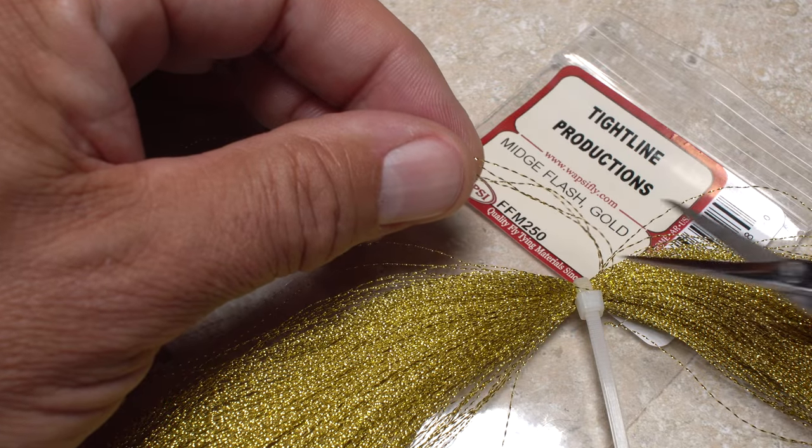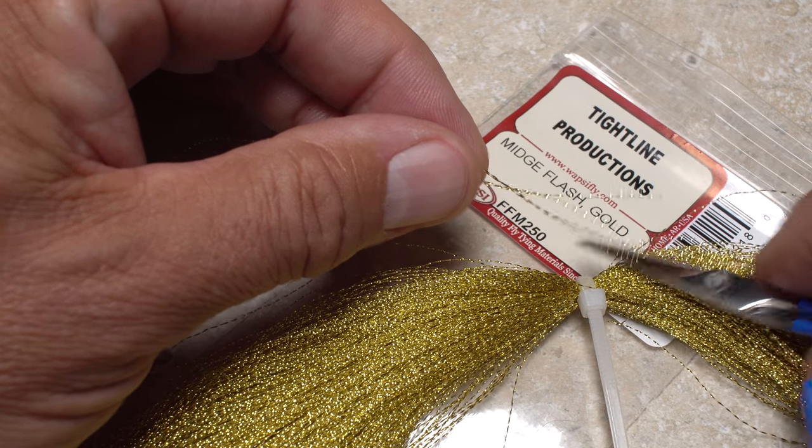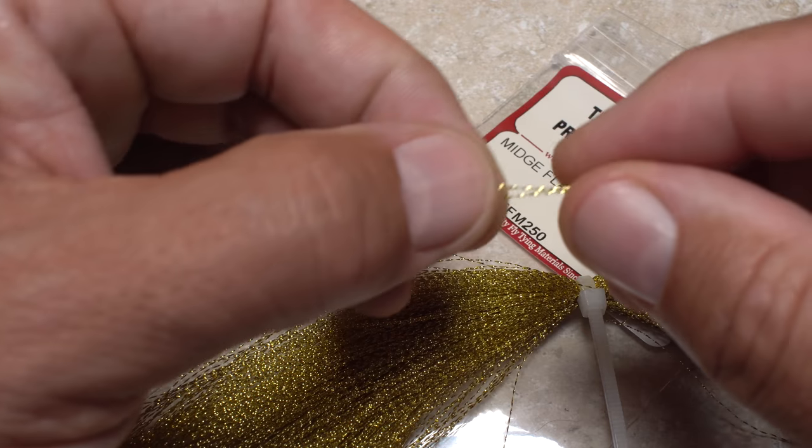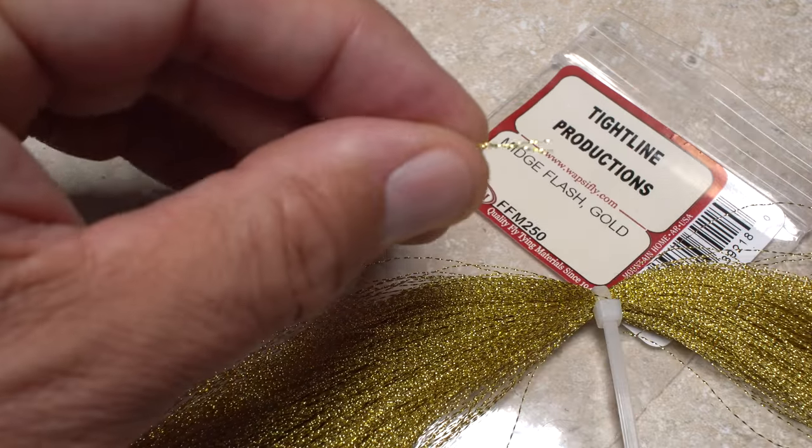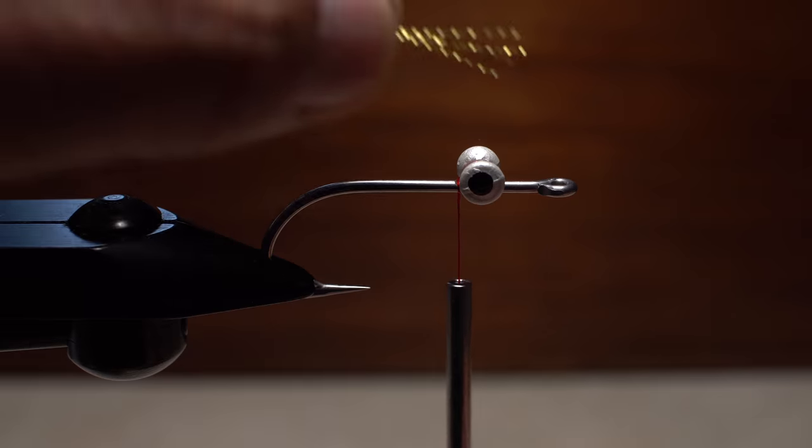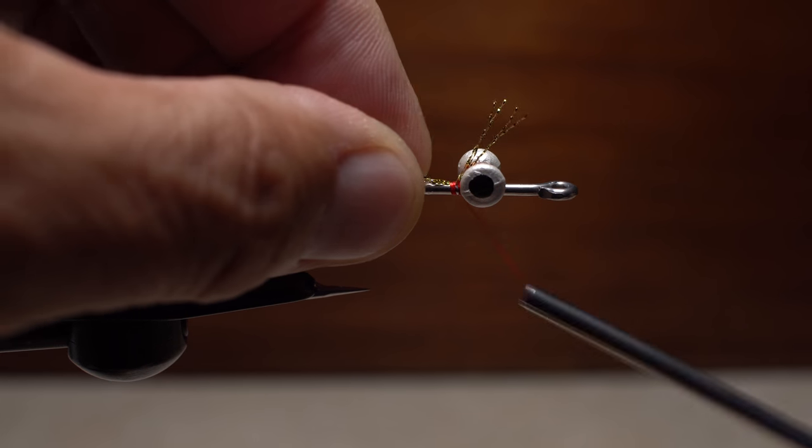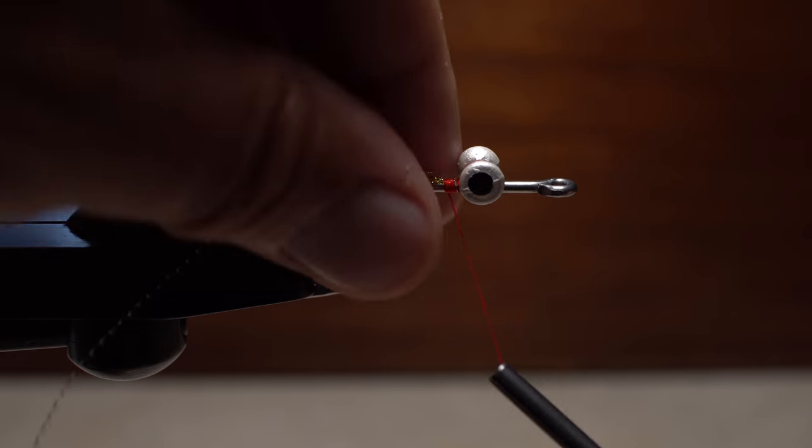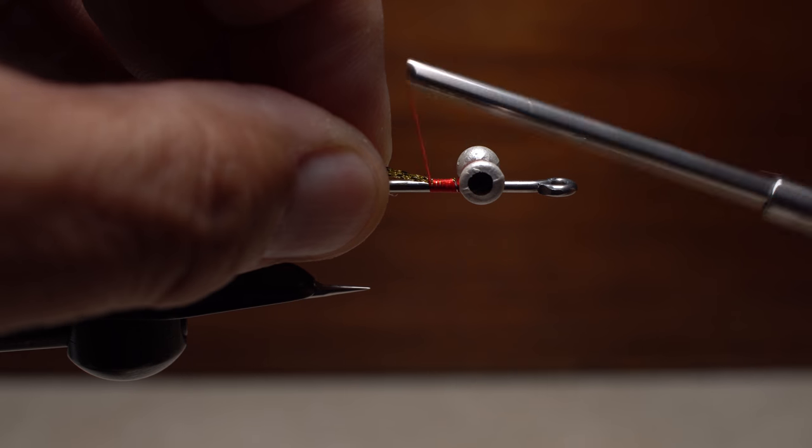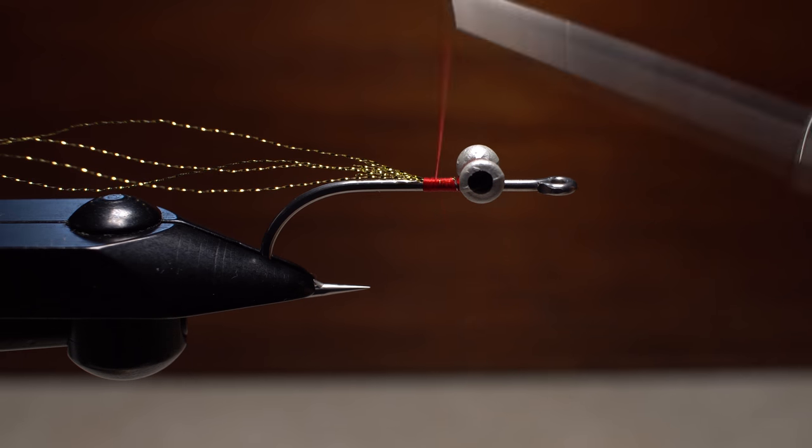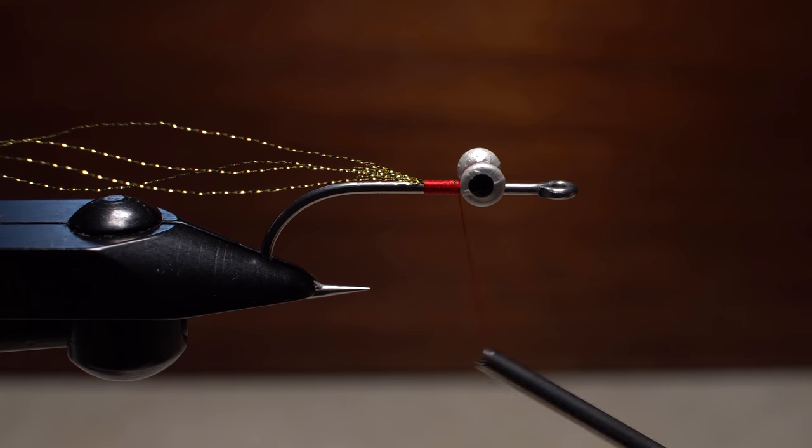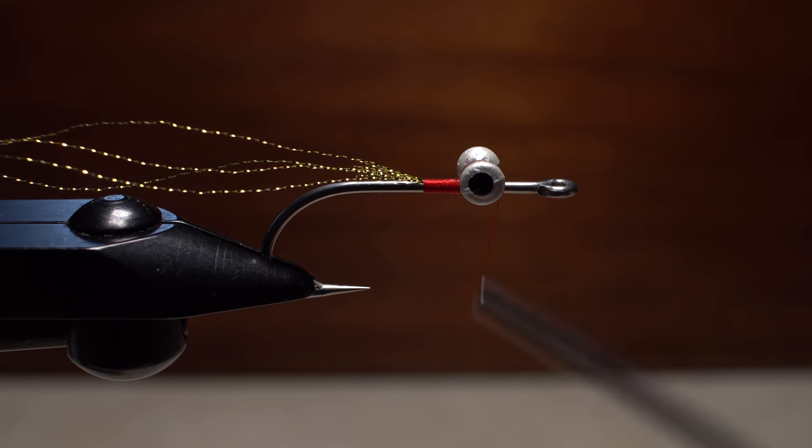For a bit of flash, snip four and only four strands of gold crystal flash free from the hank. I think many people really overdo it in terms of flash. Secure the material behind the dumbbell eyes, doubling a short length back and binding it down so there's no way it can pull free. With the material well secured, advance your tying thread around the eyes and up the shank, leaving just a little bit of space behind the hook eye.